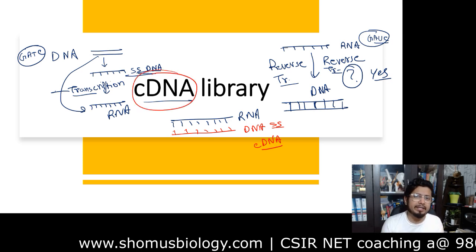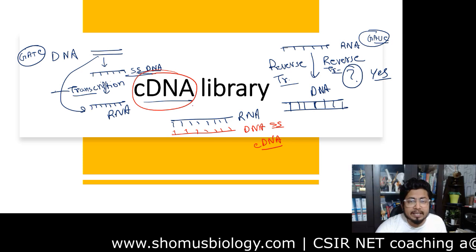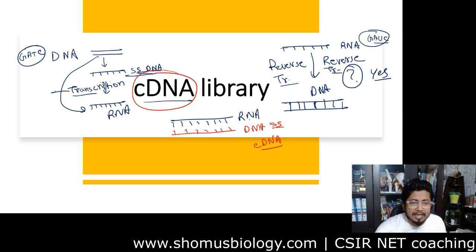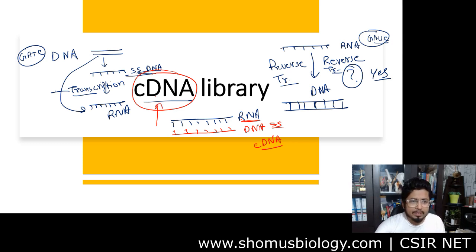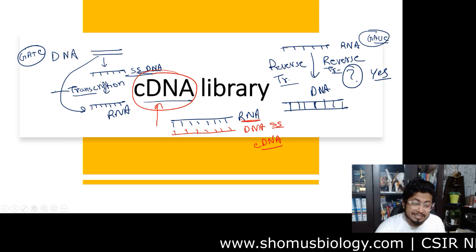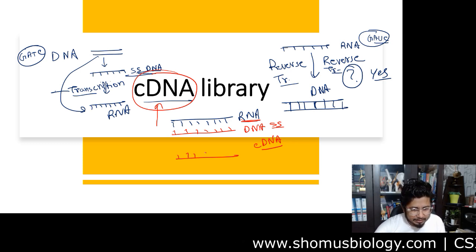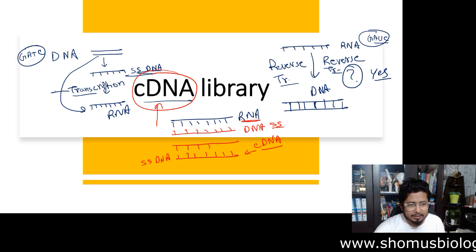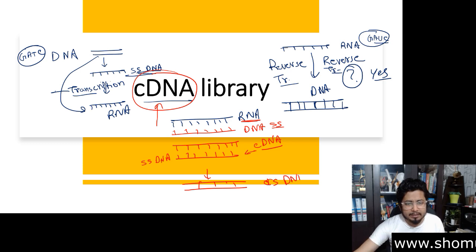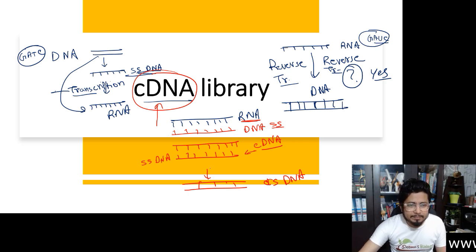This single-stranded DNA is known as complementary DNA, or cDNA. The very first strand of DNA synthesized utilizing RNA as a template using reverse transcriptase is called complementary DNA or cDNA. Then, using that single-stranded cDNA as a template, another strand of DNA is made, producing normal double-stranded DNA. The second step does not require reverse transcriptase since a DNA strand is used as template.